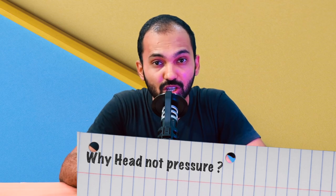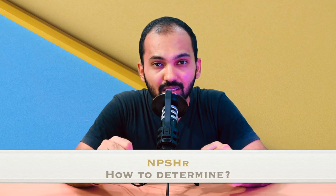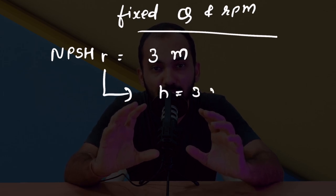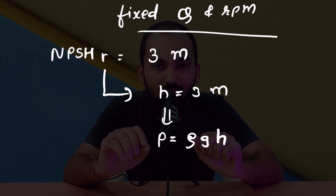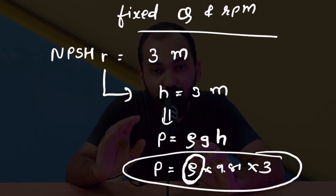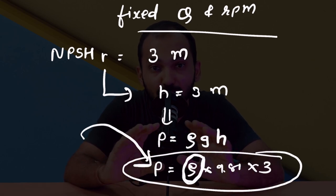Two values are important: first, NPSH available calculated at given conditions, and second, NPSH required provided by the pump manufacturer. Two questions arise: why does the pump manufacturer give NPSH in terms of head rather than pressure? And how does the pump manufacturer decide NPSH required? The reason head is used is that pump manufacturers test NPSH required using water as the reference fluid and determine the limits. For a certain flow rate and RPM, if NPSH required is 3 meters, then for a different fluid we use p = ρgh — multiplying by that fluid's density gives a different limiting pressure, but the head value of 3 meters remains the same.